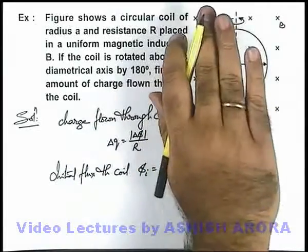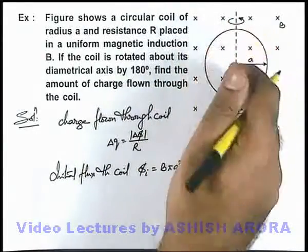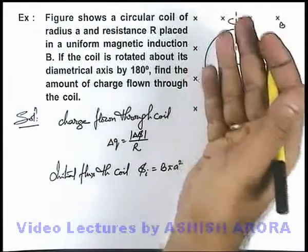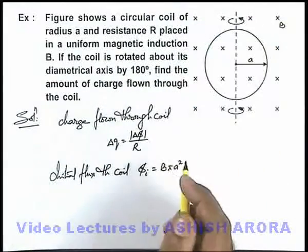If the coil is rotated by 180 degrees, if its area vector was initially in the inward direction, on rotating it will come out in the upward direction.